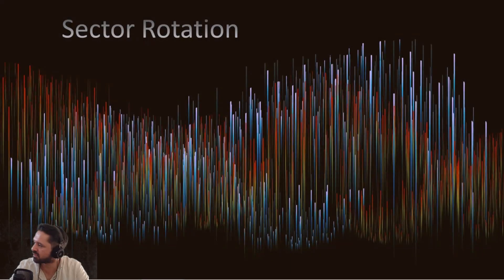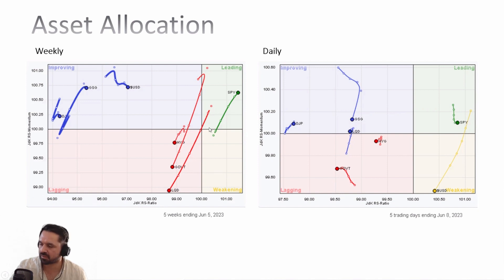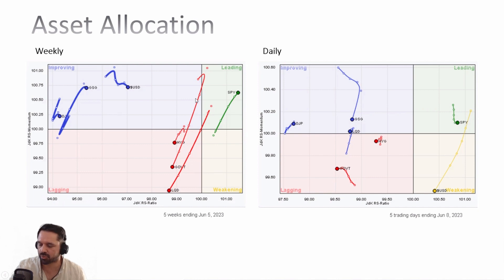Now we come to the sector rotation, which is what I mainly watch. Here we have the asset allocation model — which assets are currently interesting. You can see that the S&P is the only asset in the leading quadrant, and this is measured against the benchmark VBINX, which is a Vanguard Balanced Index Fund — a 60/40 ETF, 60% equities and 40% bonds — representing the broader market. The S&P is outperforming the rest of the market.